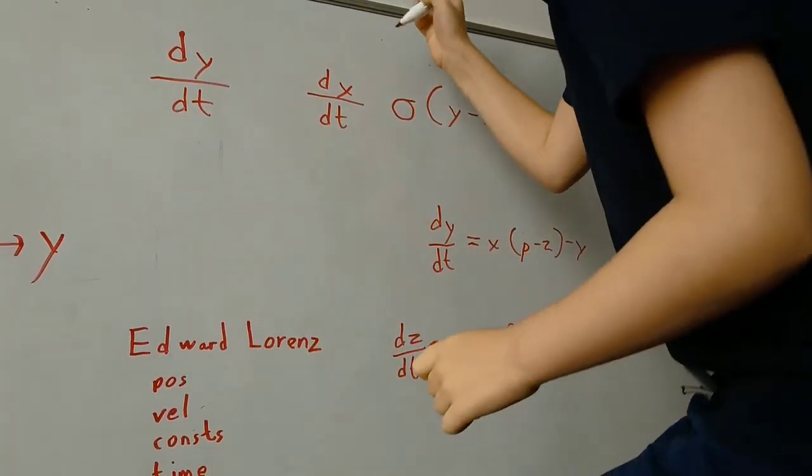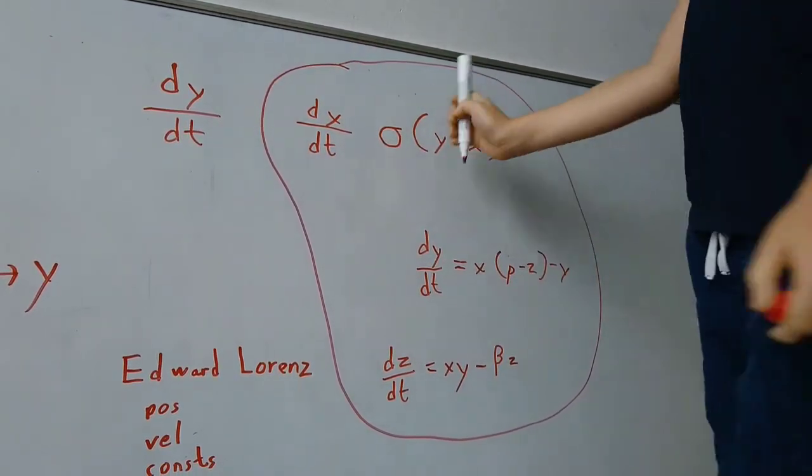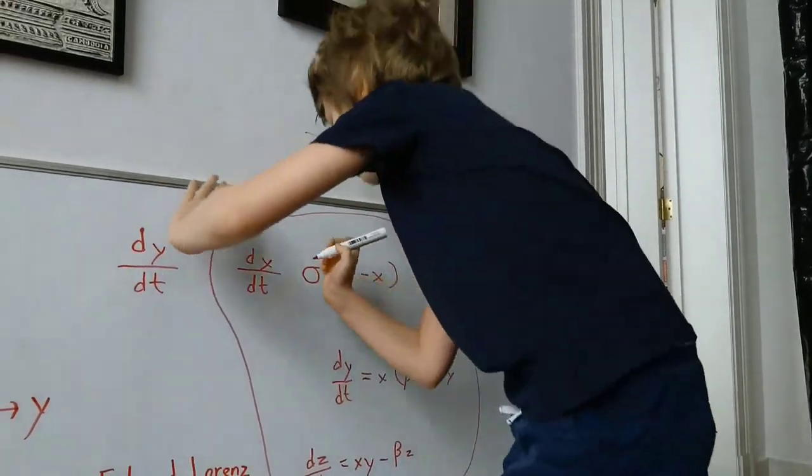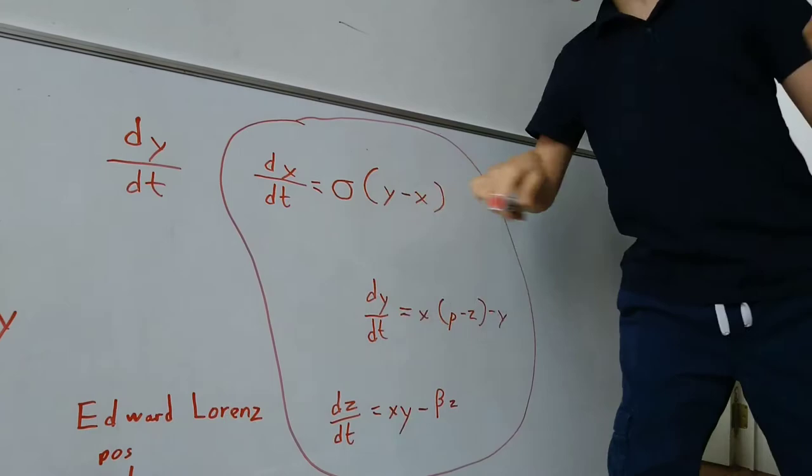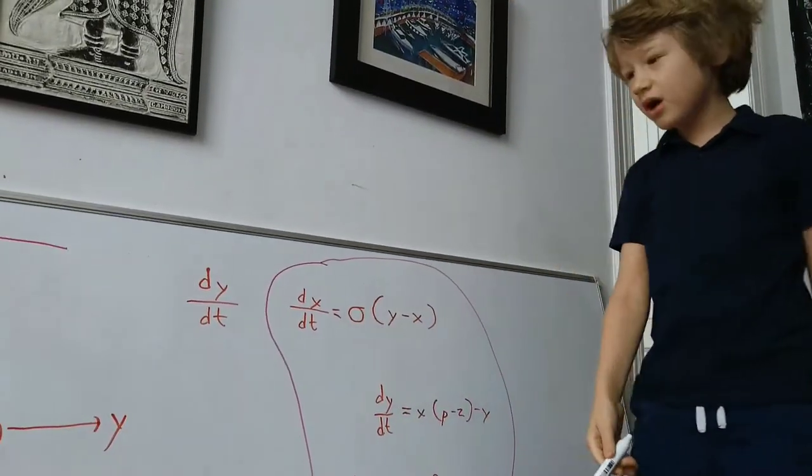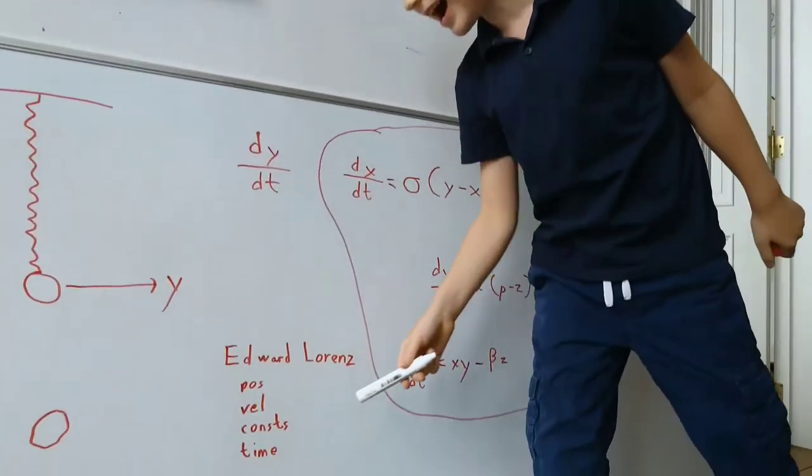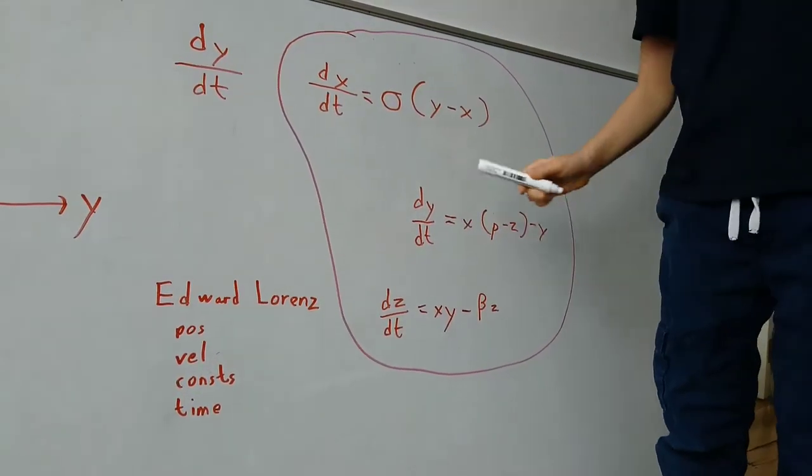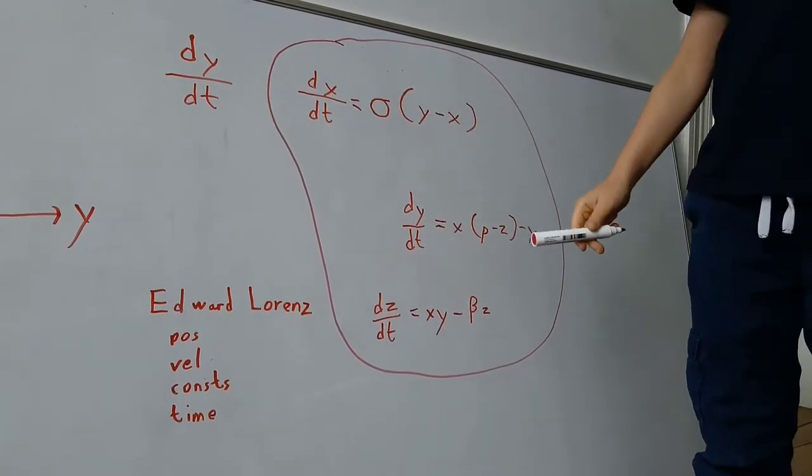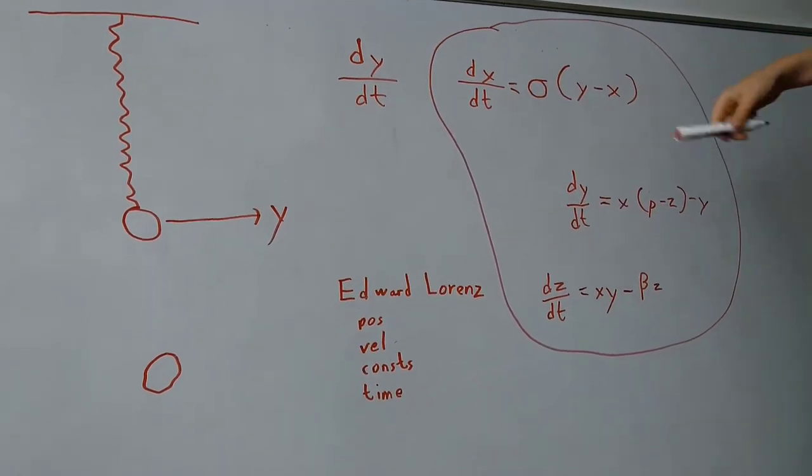So this over here is the formula. So dx over dt, I forgot the equals sign here. Okay, and dx over dt equals sigma, which in the code you'll see it's consts dot x, times y minus x, meaning that's the x, y of the point minus the x of the point.